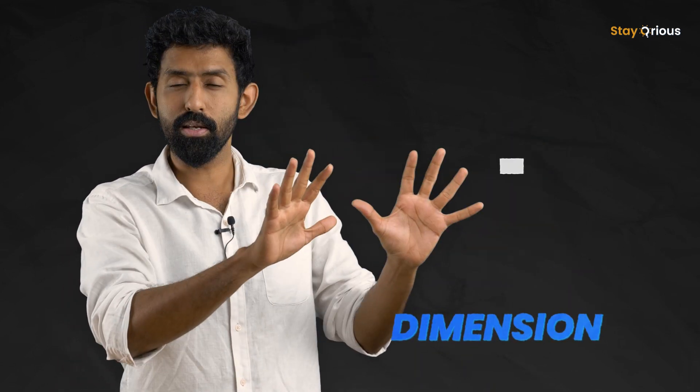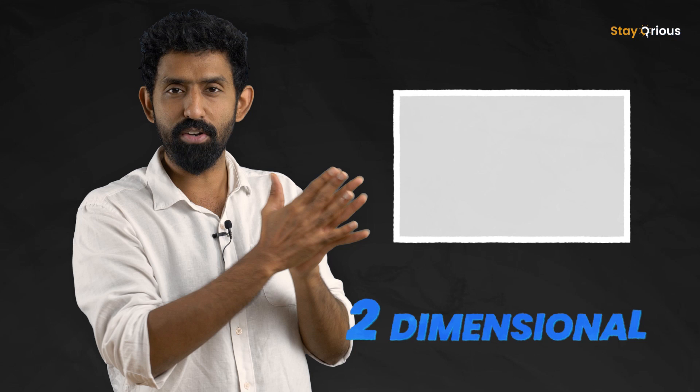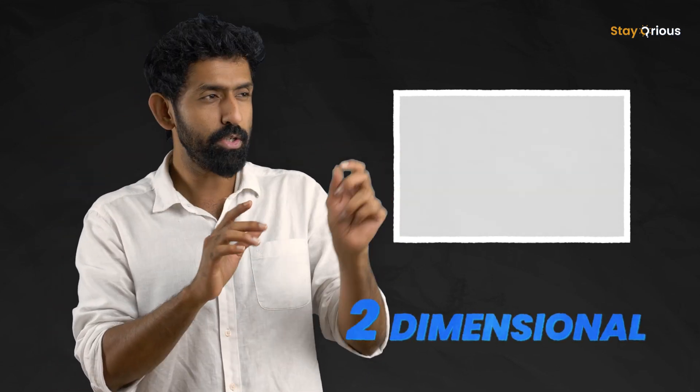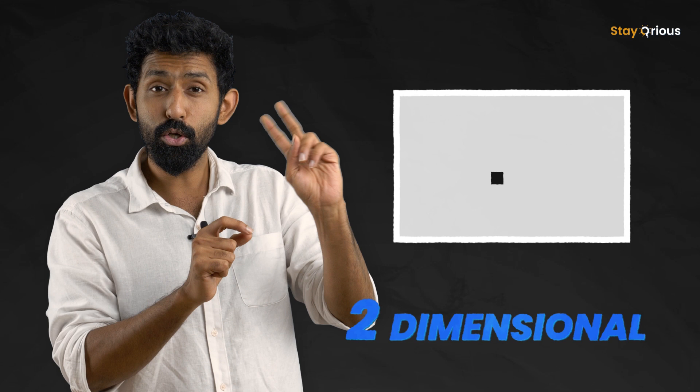So basically, the number of numbers you need to tell the position of something in that space is what we call the dimension of that space. So a screen is what we call two dimensional, flat. Screens, tables, anything that's flat, to tell the position of something on it, we need two numbers.